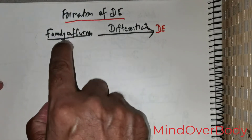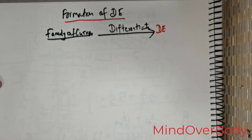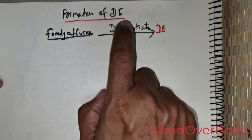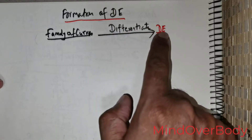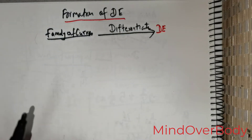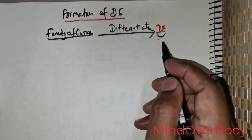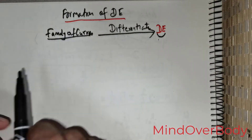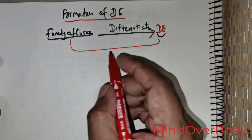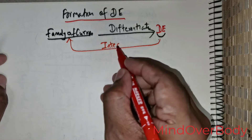If you are given a family of curves and you are asked to obtain a differential equation, then you will have to use the concept of differentiation to extract or obtain the differential equation. On the other hand, if you are given a differential equation and you are asked to obtain the family of curves, in that case you will have to perform the action of integration.